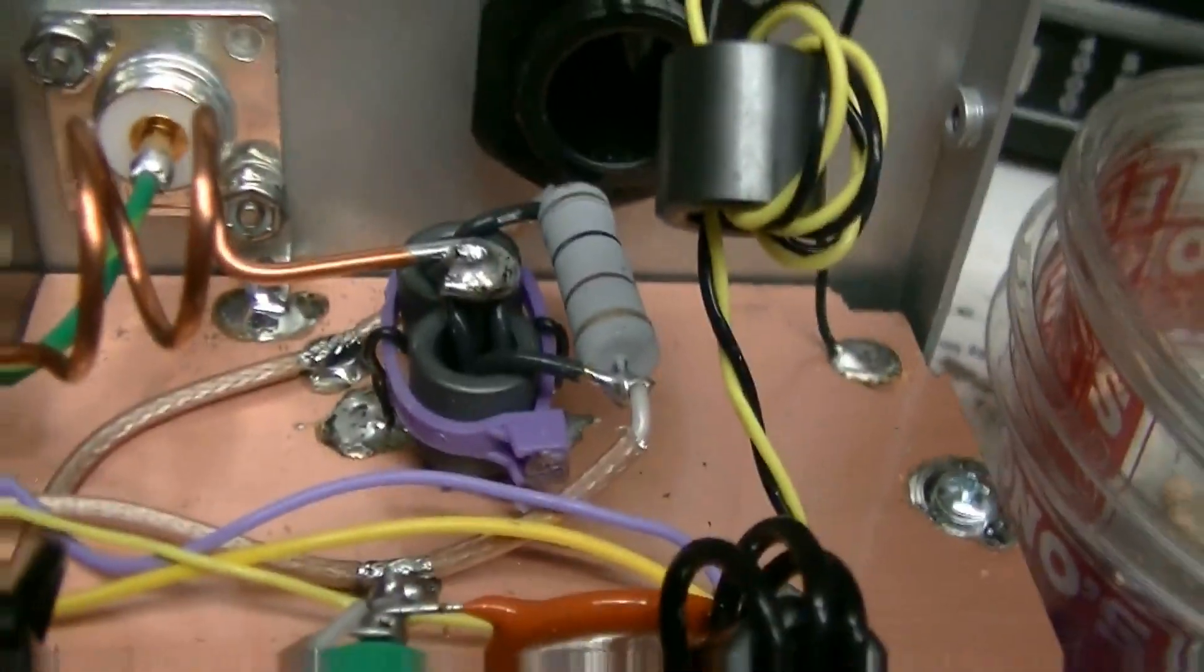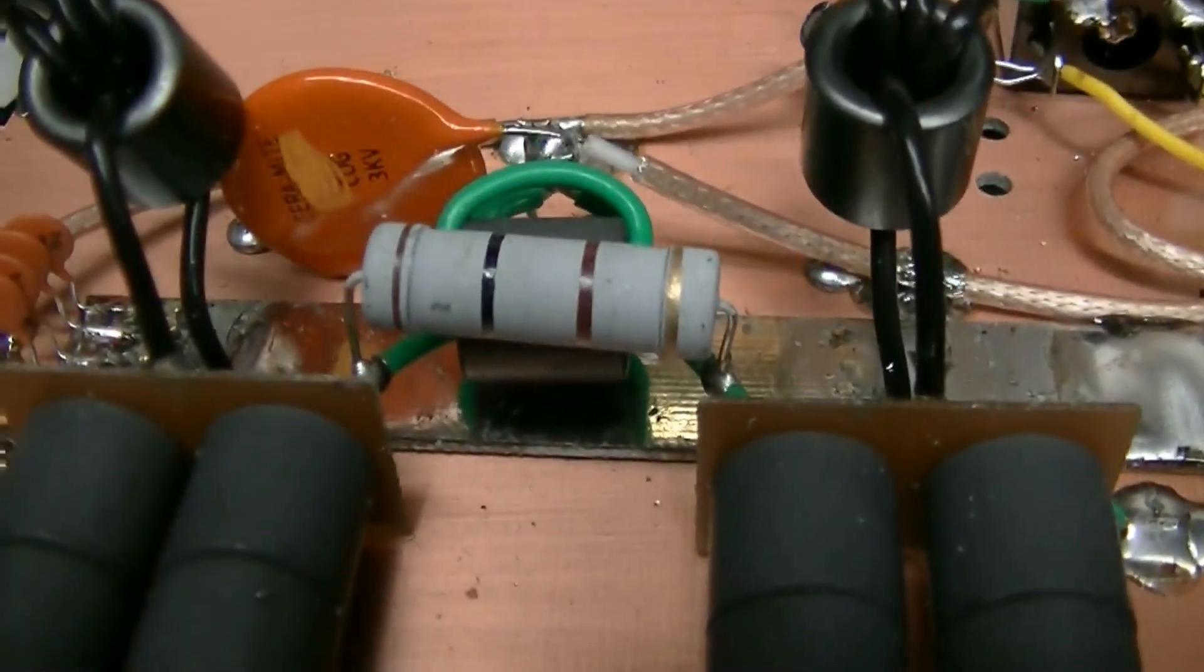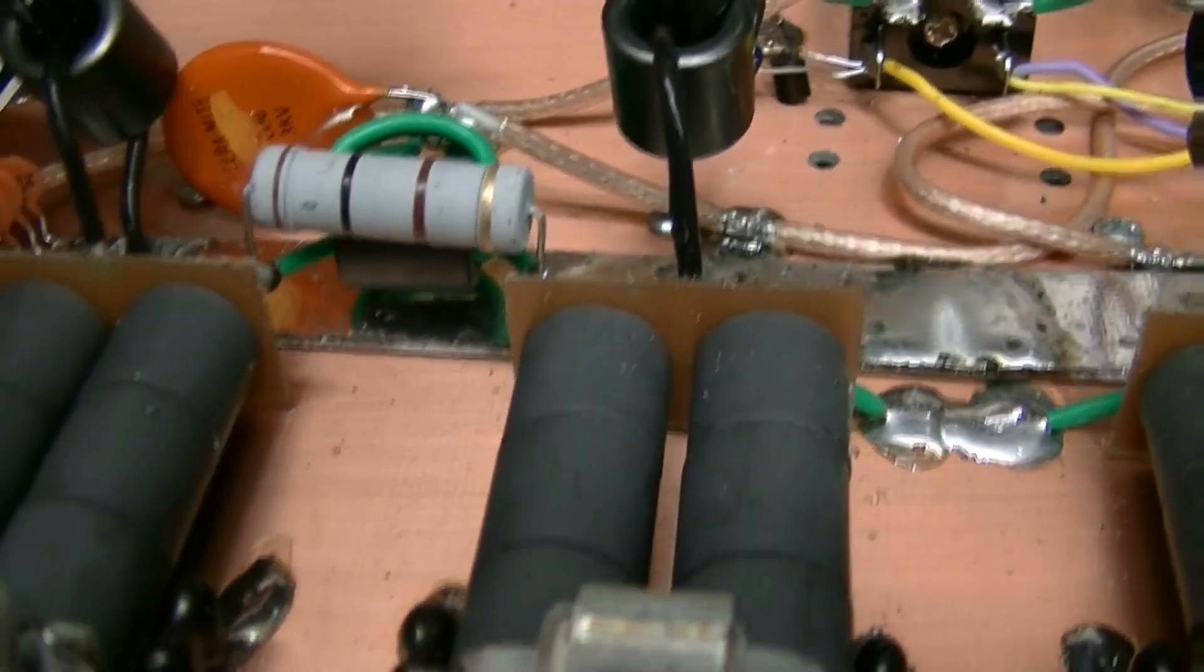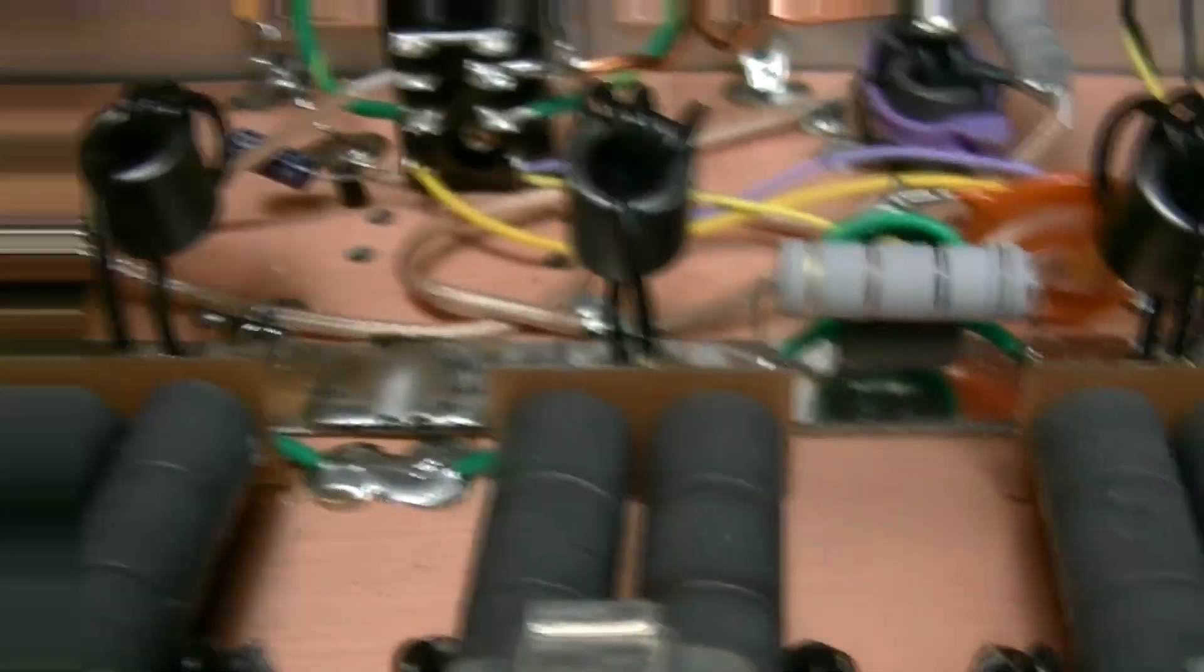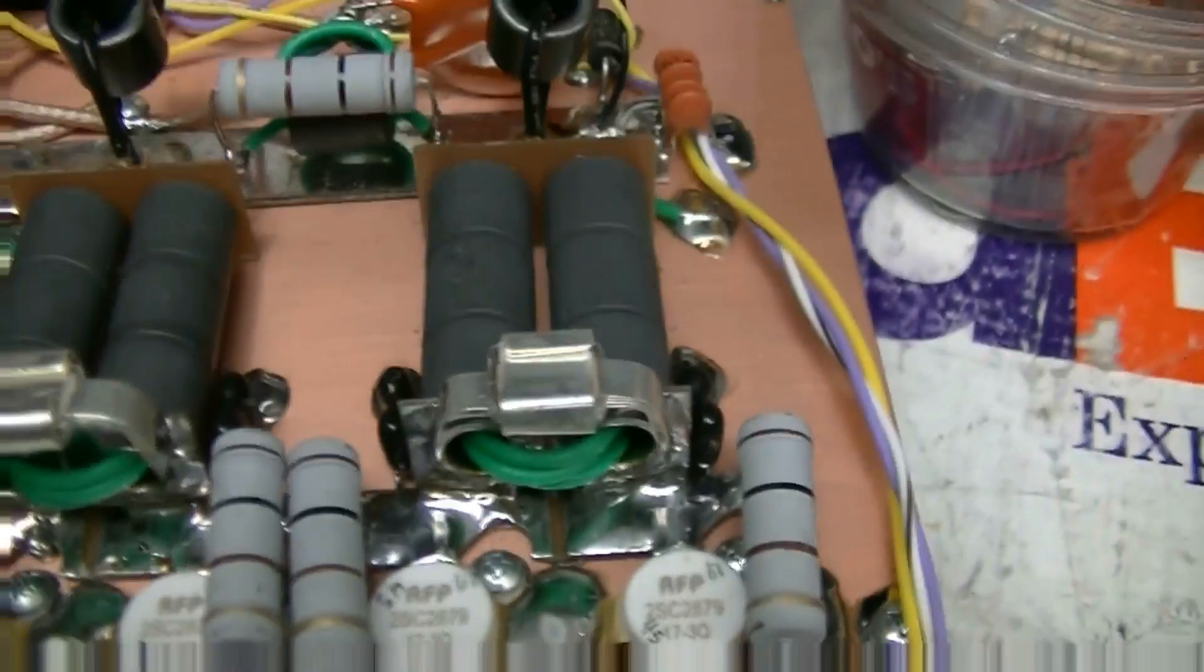Now you noticed all the little half watt or two watt resistors are gone. And I've got five wire resist or five watt resistors in here for the balance resistors. And I put five watts in all the feedback resistors.